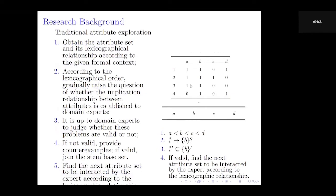Let's first introduce the traditional attribute exploration process. Traditional attribute exploration consists of five steps. According to the given formal context, the attribute set and its lexicographic relationship are obtained. Then, according to the lexicographic order, the question of whether the implication relationship between attribute sets is valid is posed. It gradually rests to the domain expert.